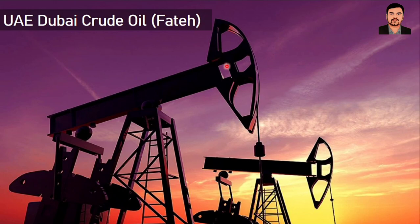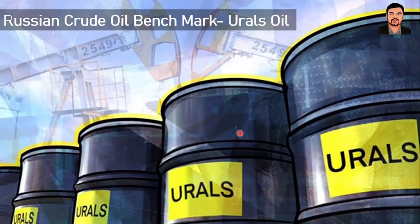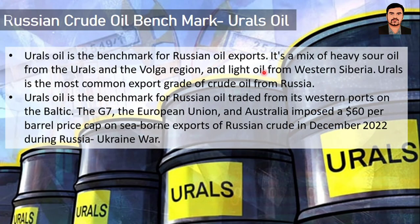The UAE Dubai crude oil, also called Fateh, is a medium sour crude used as a price benchmark especially in Asian countries, as it is one of only a few Persian Gulf crude oils available for immediate delivery. Dubai crude has a sulfur content of 2%, making it six times more sour than Brent and eight times more sour than WTI, making it more difficult to refine due to high sulfur content.